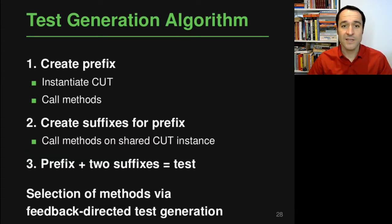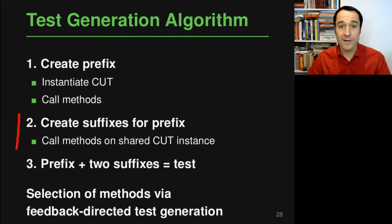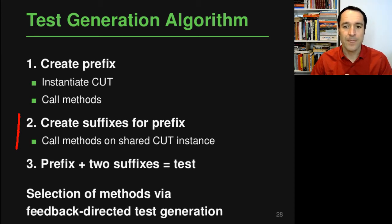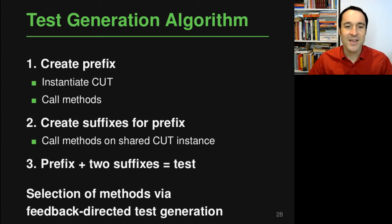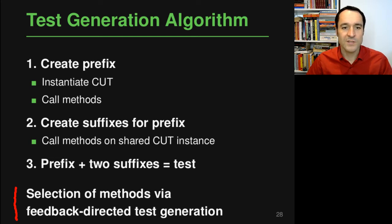To generate such a test, the algorithm takes three steps. First, generate the prefix by instantiating the class under test and calling some methods on it. Whenever the algorithm adds a call or constructor call to the test, it executes the entire test at that point to check whether the call yields an exception — only if it does not yield an exception does it continue. This idea is similar to what we saw earlier in the lecture when we talked about Randoop and its feedback-directed random test generation.